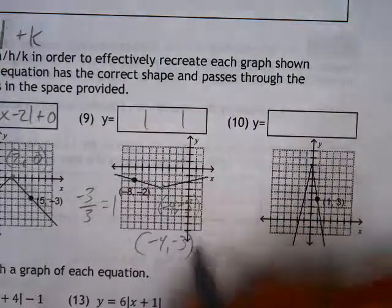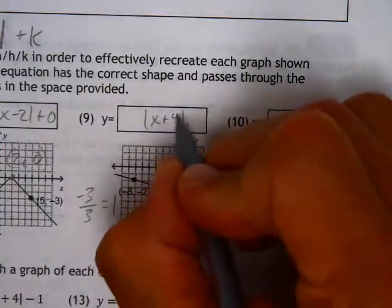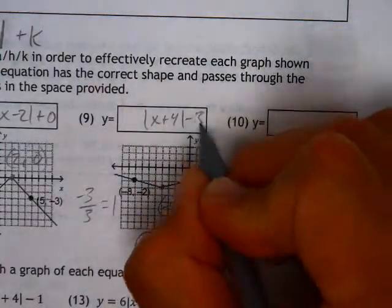Inside our absolute value, we're going to change the sign of the x value, call it x plus 4, and then a minus 3.